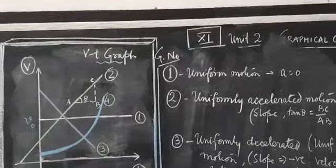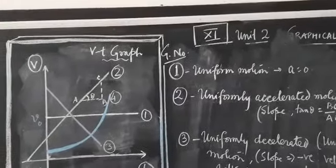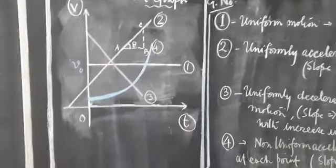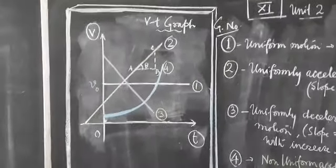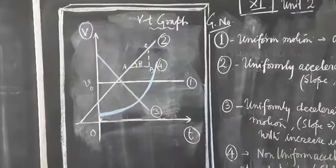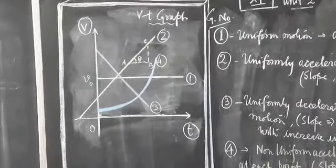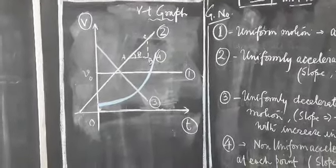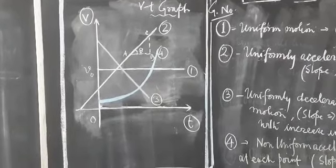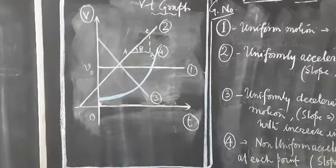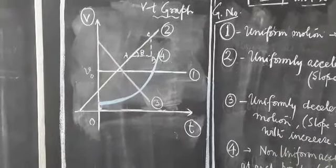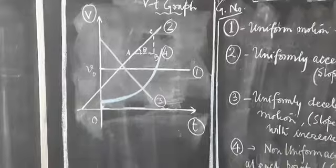Now graphical concept number two. Let's look at another set of graphs. This graph is a VT graph — a velocity-time graph. You can see that there are four graphs given in the diagram: graph number one, two, three, and four. V is along the Y axis and T is along the X axis.